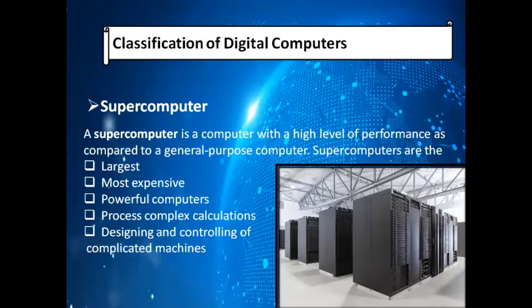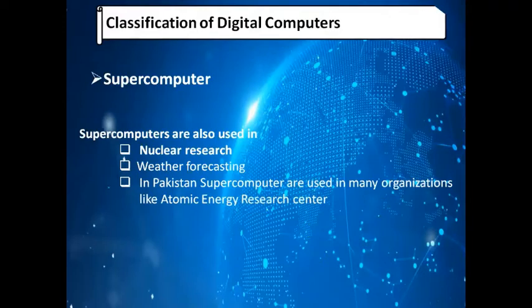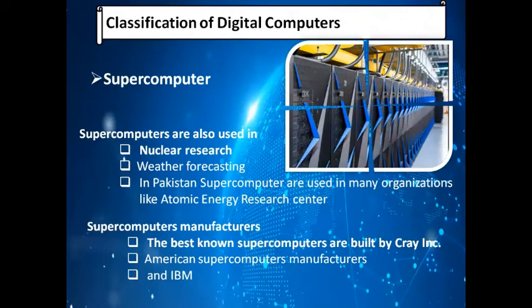The largest and fastest supercomputers are also used in nuclear research and weather forecasting. In Pakistan, supercomputers are used in organizations like the Atomic Energy Research Center. The best known supercomputers are built by Cray, an American supercomputer manufacturer, and IBM. This is a diagram of an IBM supercomputer.